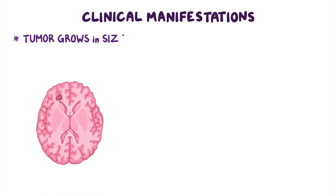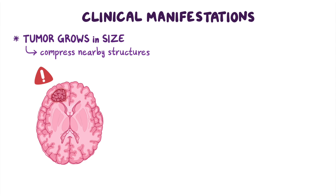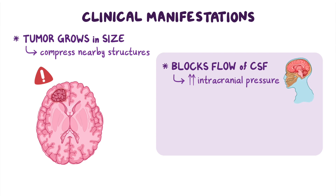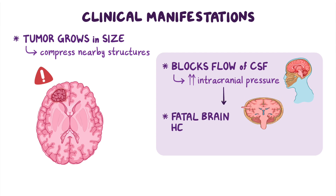As the tumor grows in size, it can compress nearby structures, interrupting their normal functions. For example, if the tumor blocks the flow of cerebrospinal fluid, it can cause an increase in intracranial pressure, or the pressure within the skull. This is a dangerous complication that can lead to a fatal brain herniation.